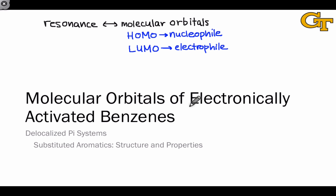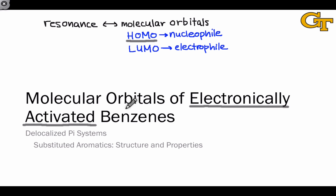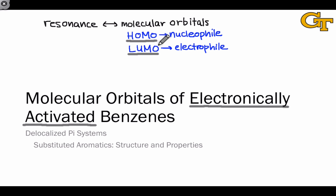Benzenes substituted with strong electron donating or electron withdrawing groups are what we might call electronically activated relative to unsubstituted benzene — they're either electron rich or electron poor. Electron rich benzenes have HOMOs that resemble the resonance structures we can draw for those species. Electron poor benzenes have LUMOs whose shapes reflect the resonance structures we can draw for those molecules. In this video we're going to look at resonance structures of electron rich and electron poor benzenes and see how those relate to the shapes of the HOMO and LUMO respectively.